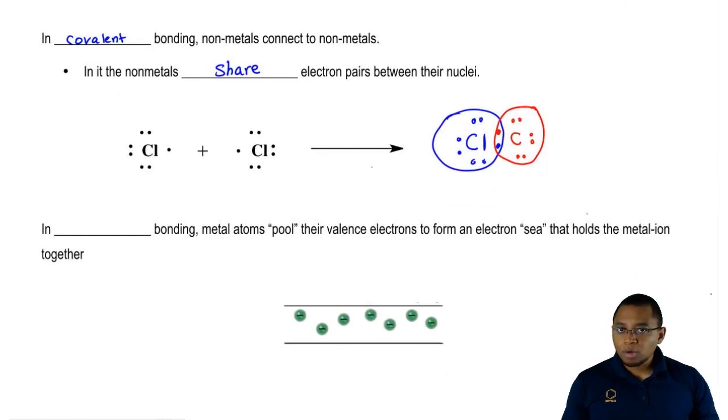The final type of bonding which we normally don't see is metallic bonding. We're going to say metal atoms pool their valence electrons to form an electron sea that holds the metal ions together.